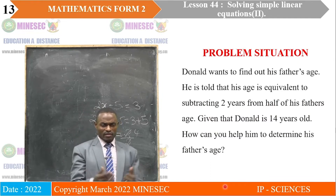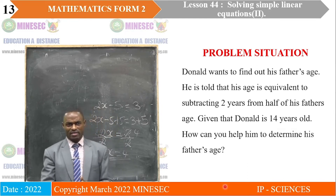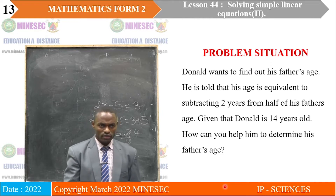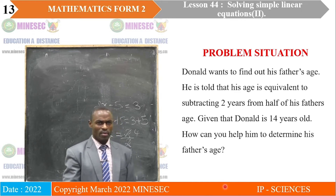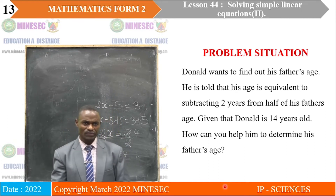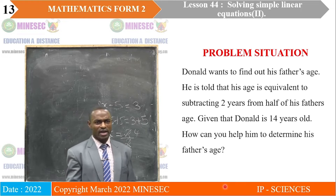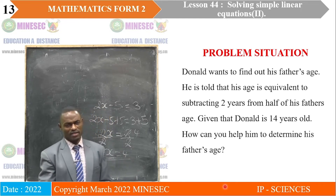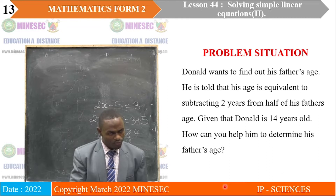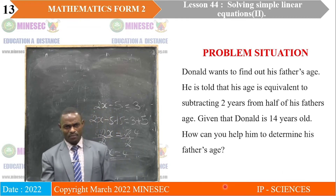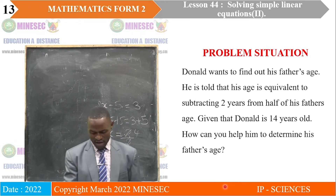Now, the problem situation: Donut wants to find out his father's age. He is told that his age is equivalent to subtracting 2 years from half of his father's age. Given that Donut is 14 years old, how can you help him to determine his father's age? We just need to identify the problem faced by Donut, and in the course of this lesson we shall come back to provide the solution.